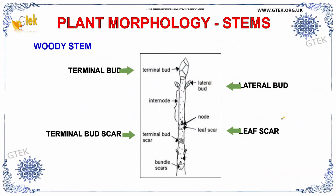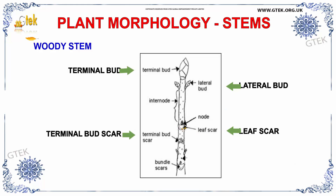Now let us see about stems — that is, woody stems. You can see the woody stems here. It consists of a terminal bud, lateral bud, node, leaf scar, and terminal bud scar. And below that is the bundle scar. This portion is called internode, which is represented over here.